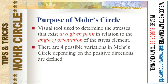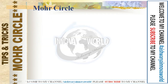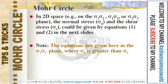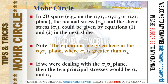The purpose of Mohr's circle is that it is actually a visual tool used to determine the stress at a given point in relation to the angle of orientation of the stress element. There are four possible variations in Mohr's circle depending on how positive directions are defined. It can involve sigma 1 and sigma 2, or sigma 1 and sigma 3. The shear stress sigma_s can also be written as tau_s or tau_xy. Sigma 1 will always be greater than sigma 2. If dealing with the sigma 2 and sigma 3 plane, the two principal stresses would be sigma 2 and sigma 3.